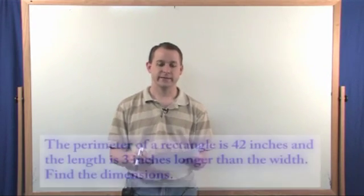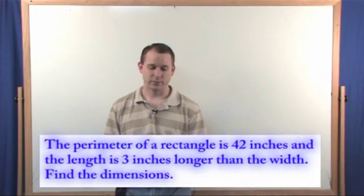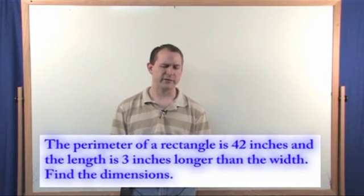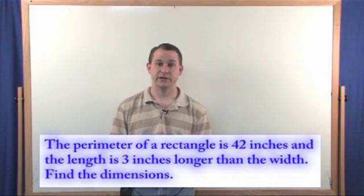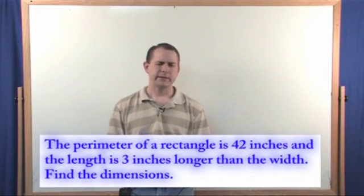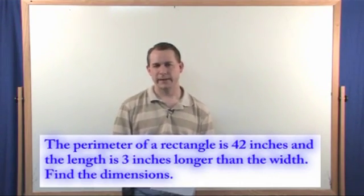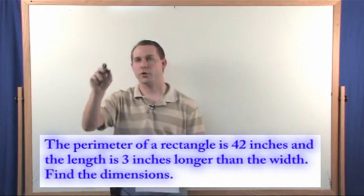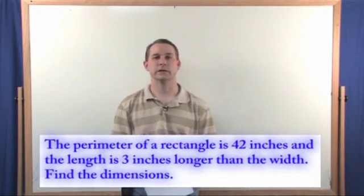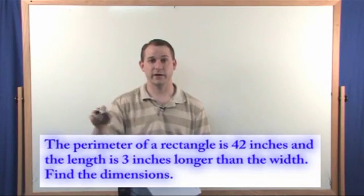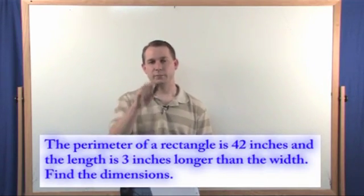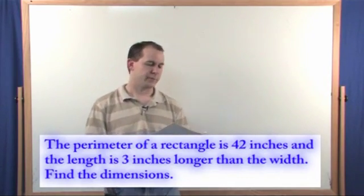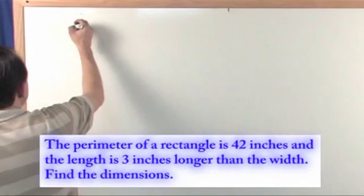The first one says, the perimeter of a rectangle is 42 inches and the length of the rectangle is three inches longer than the width. Find the dimensions of the rectangle. So the only thing that I really need to point out here that you may or may not know is the perimeter of something just means how far all the way around the base is. So if you measure with a tape measure all the way around, that would be called the perimeter. So it says the perimeter of a rectangle is 42 inches.